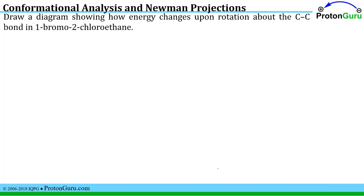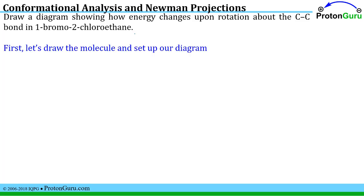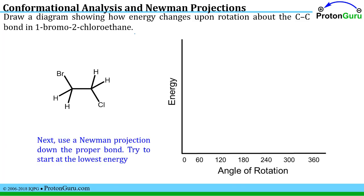Next we have a much more involved problem. It's asking us to actually produce our own Newman projections and use those to draw a diagram showing how the energy changes upon rotating around the carbon-carbon bond in a particular molecule — in this case, 1-bromo-2-chloroethane. We really need to start off carefully and think this through. So first let's draw the molecule and set up our reaction coordinate diagram: bond rotation versus energy.